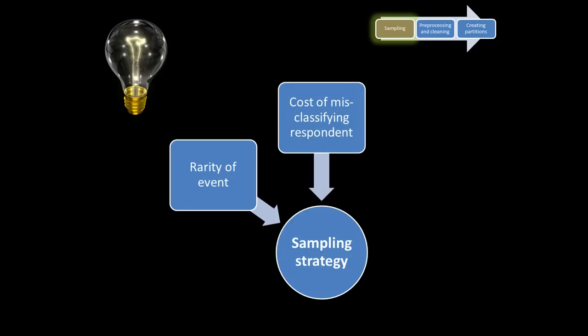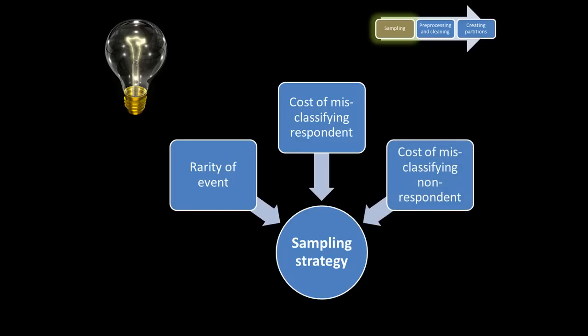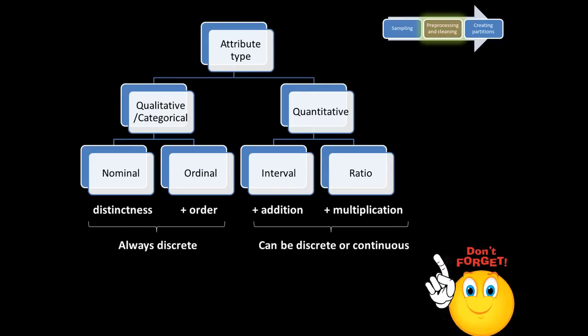We also have to think about what is the cost of misclassifying a respondent — that is, what is the cost of misclassifying a buyer as a non-buyer and a non-buyer as a buyer. These costs may not always be the same. The cost of misclassifying a non-respondent and a respondent may be asymmetrical, and that therefore plays a role in how you are going to sample. That is another important point about sampling strategy.